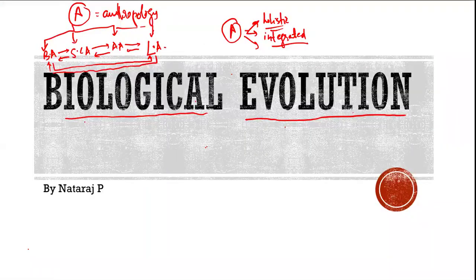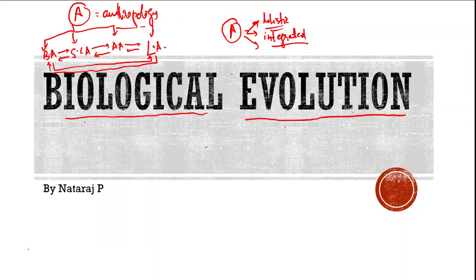So without any further delay, let's get started. We are starting biological anthro. Biological anthro is one of the four different subtopics of anthropology. This kind of classification is by different scholars, the one that we have as biological anthro, social cultural anthro, archaeological anthro, and linguistic anthro, this is by historical particular school. The main person there, that's Franz Boas.